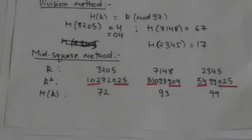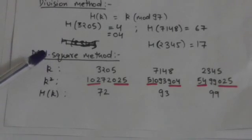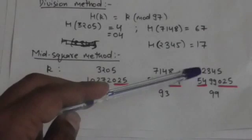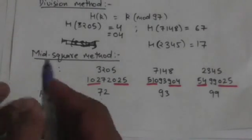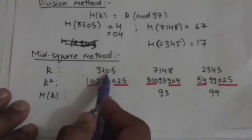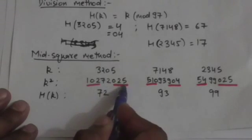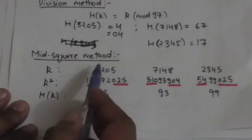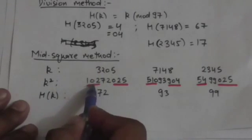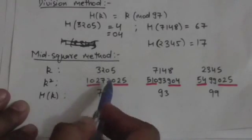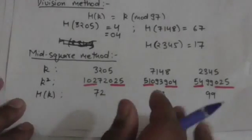Next is the mid-square method. For key 3205: when we square this key we get a value. The hash function first squares the key, then deletes some digits from the start and some digits from the end of the square. When we square 3205 we get a number; we delete three digits from the start and three from the end, and we get 72. So the hash value of key 3205 is 72.